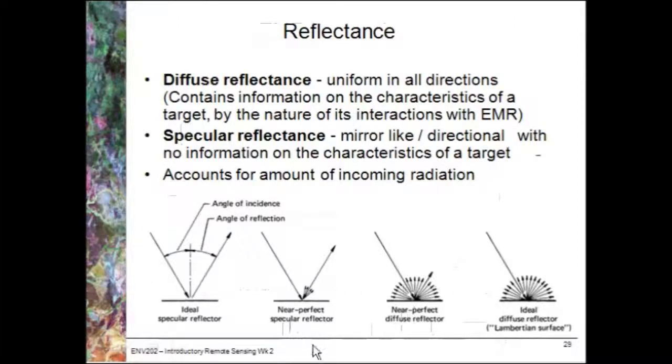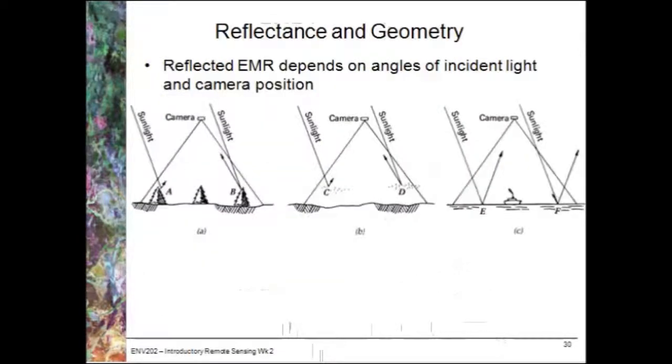Whereas a specular reflector, for example a water body, can be quite problematic. And that you'll see sunlight reflected back at you rather than being able to see the surface of the water itself. You'll just see the sun. I'm sure you've all looked at water bodies where you've been able to see that mirror-like reflection.